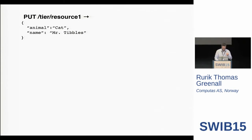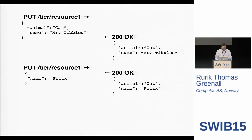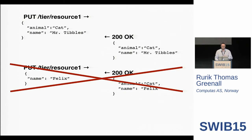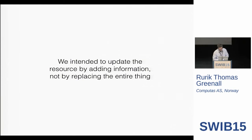I'm putting data in and calling the cat Mr. Tibbles. I get the response: yes, I've created Mr. Tibbles. Then I realize the cat's actually called Felix, and I update it by putting. But actually I haven't done what I thought I was doing. What I've done is overwritten the resource in its entirety, because PUT only allows you to put an entire resource — you replace it completely. So now I've got just a name Felix with no type. We intended to update something, but we replaced it entirely. To update with PUT you need to send the full record every time.